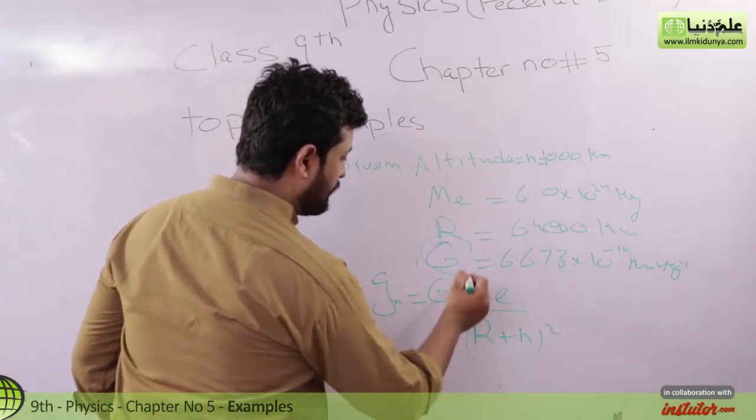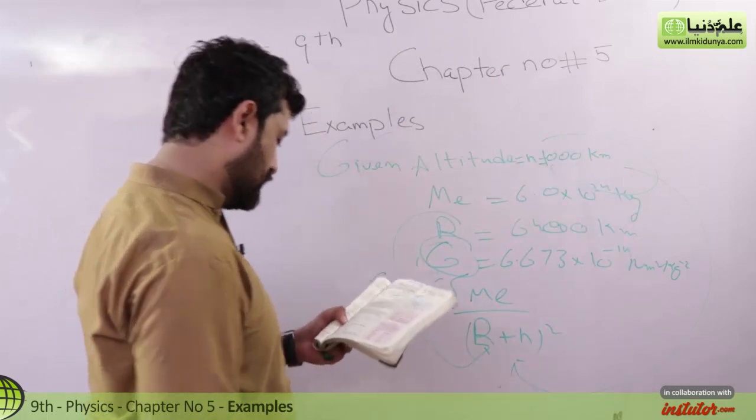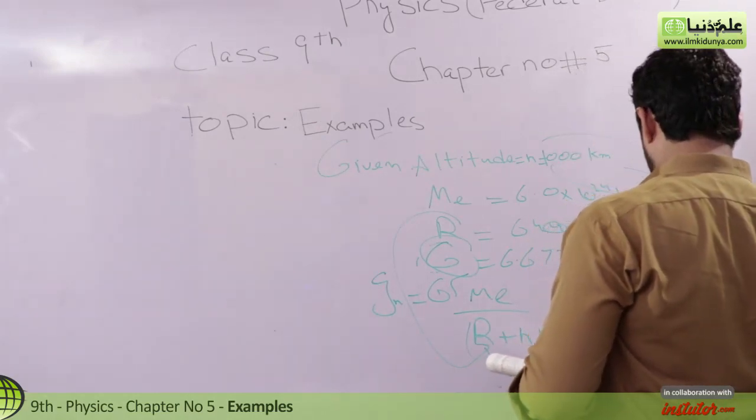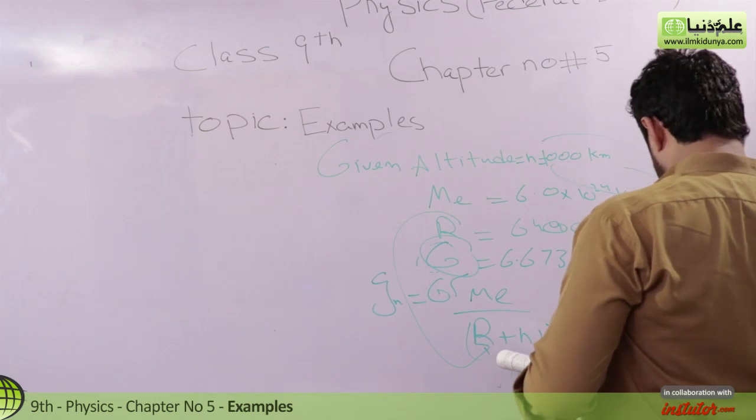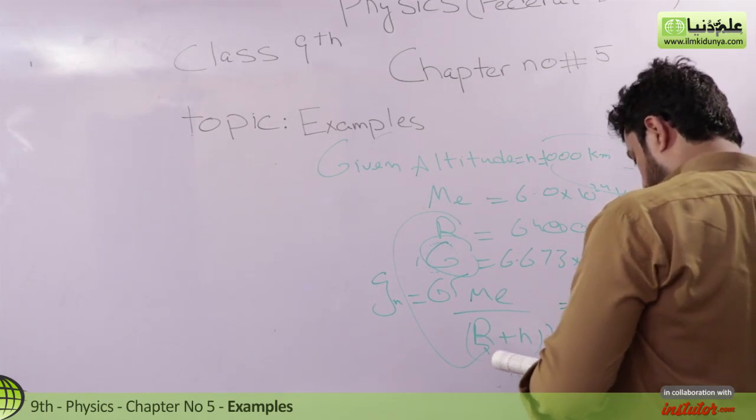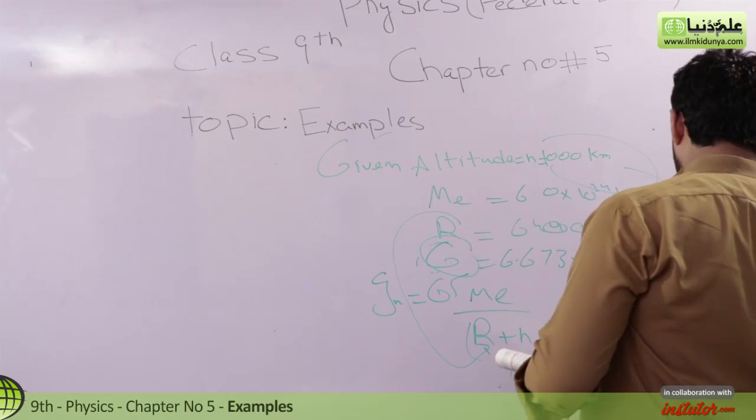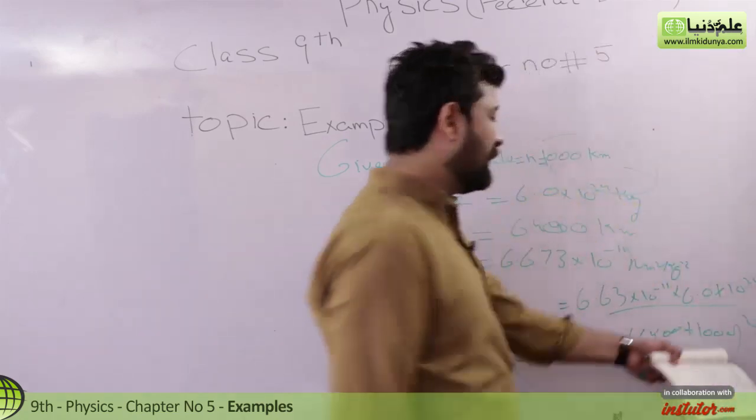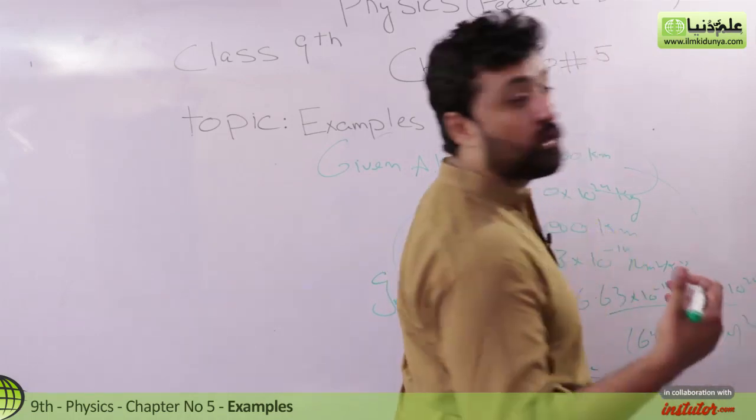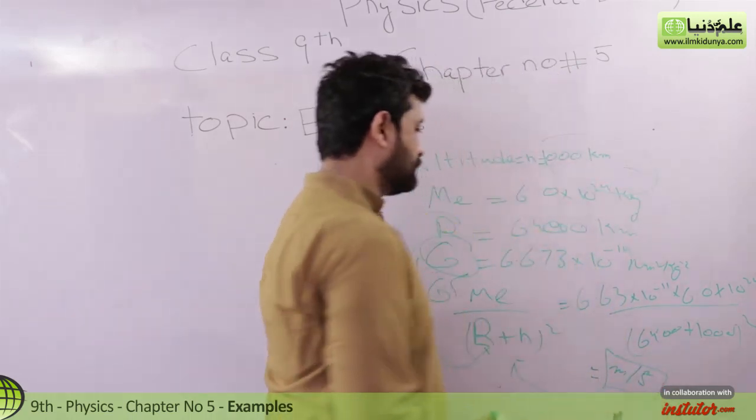Value of G, you can see here. R, you can see here. H, you can see here. 6.673 multiplied by 10 raised to power minus 11 multiplied by 6.0 multiplied by 10 raised to power 24 divided by 7.4. You can see the value of M and the power of G.